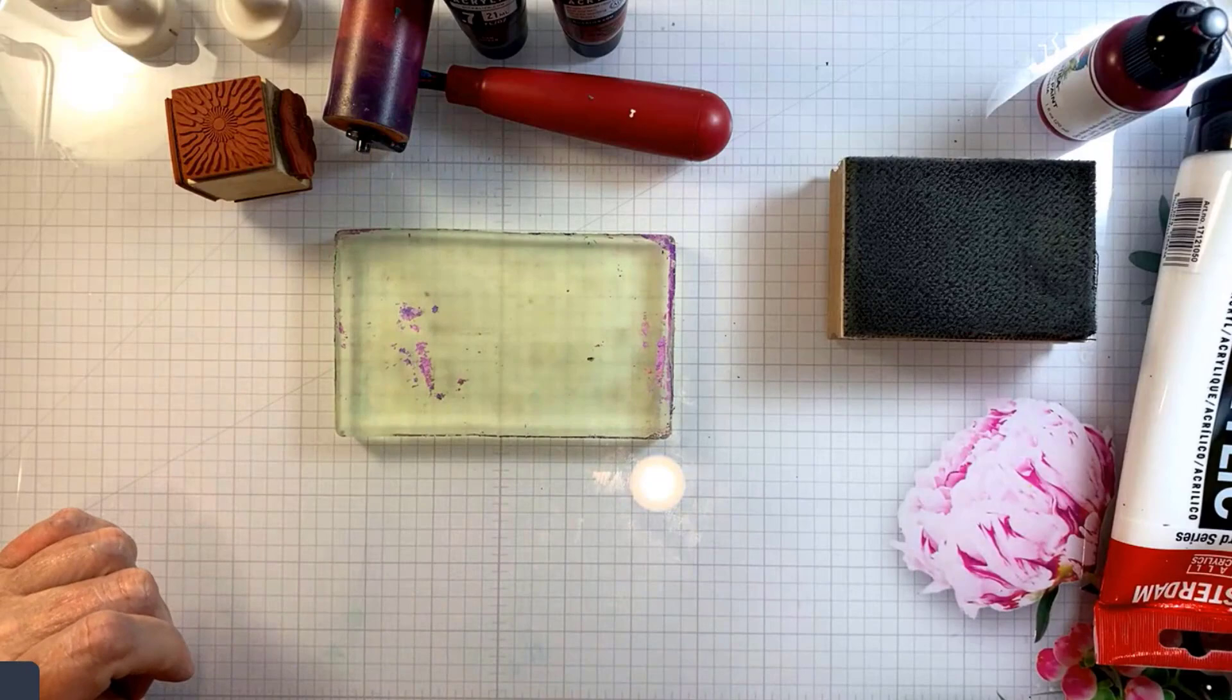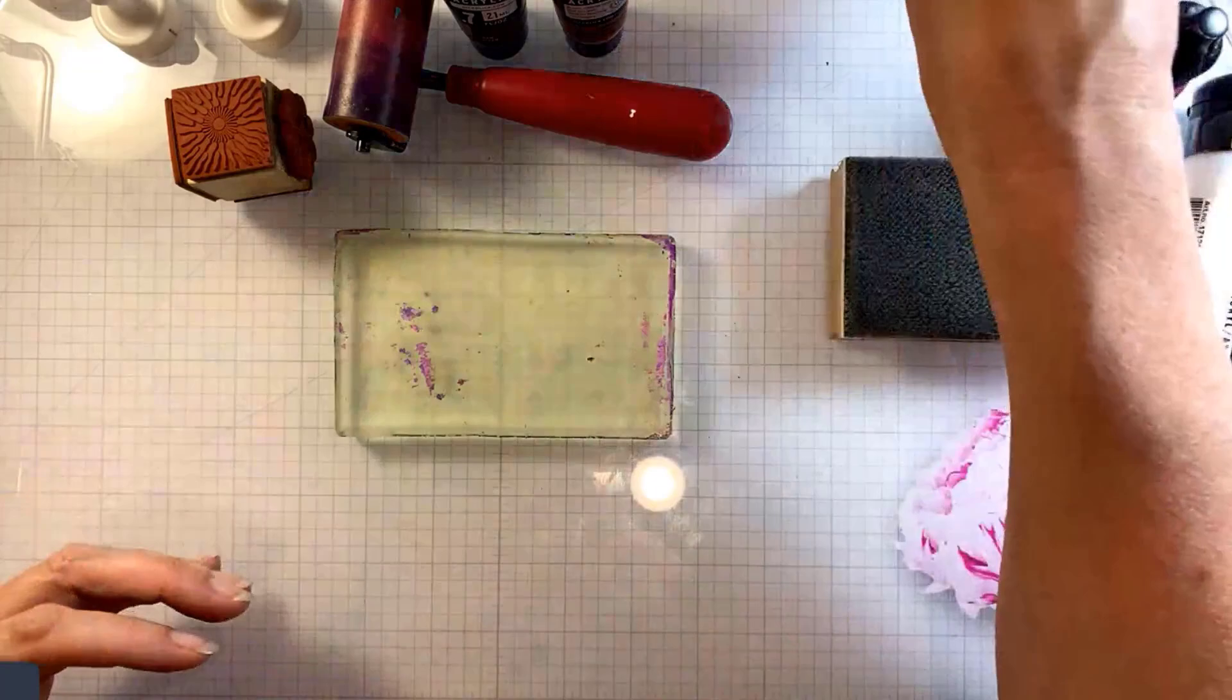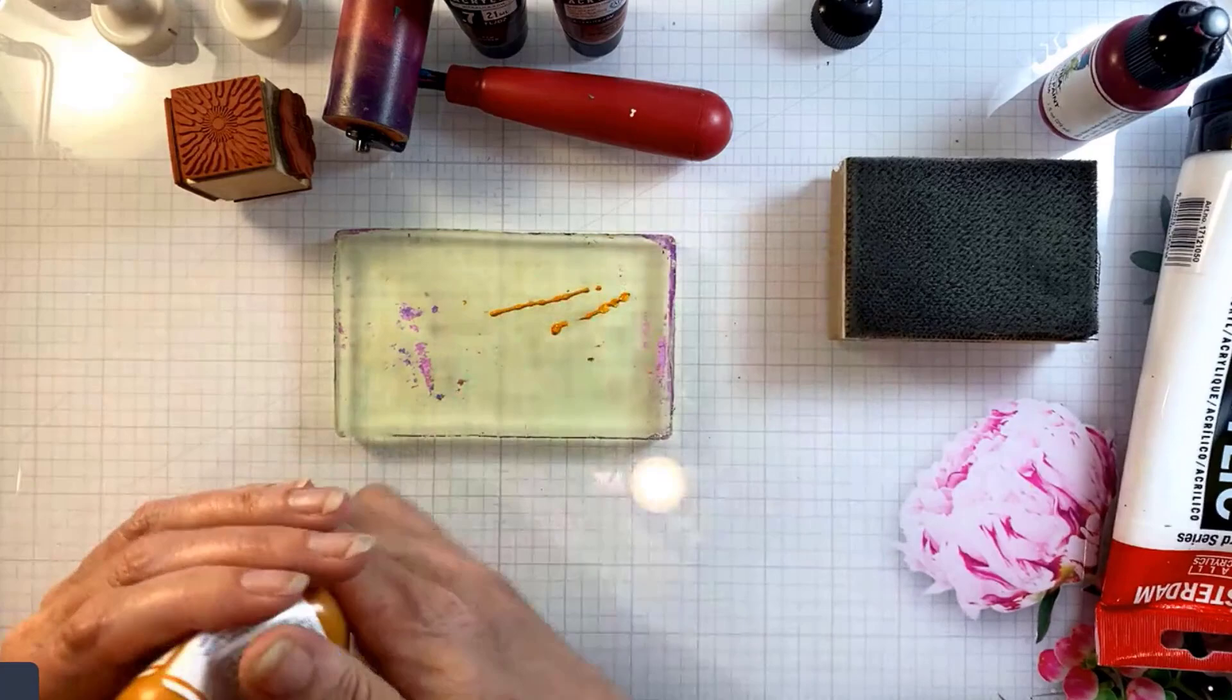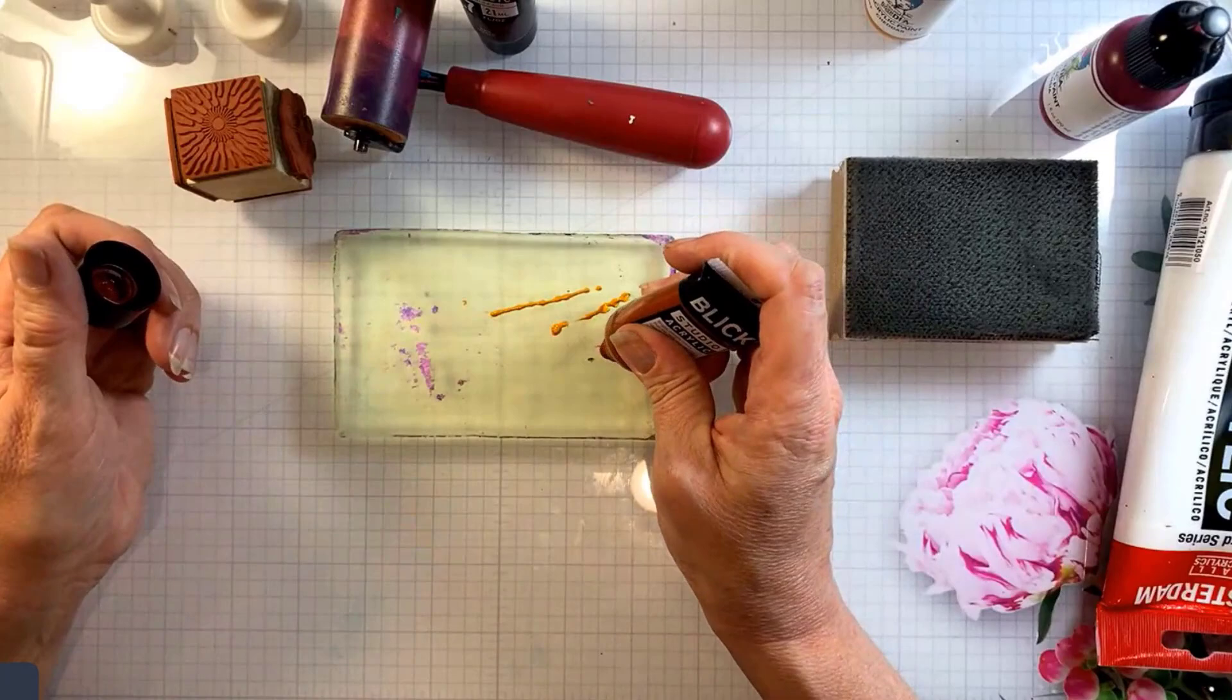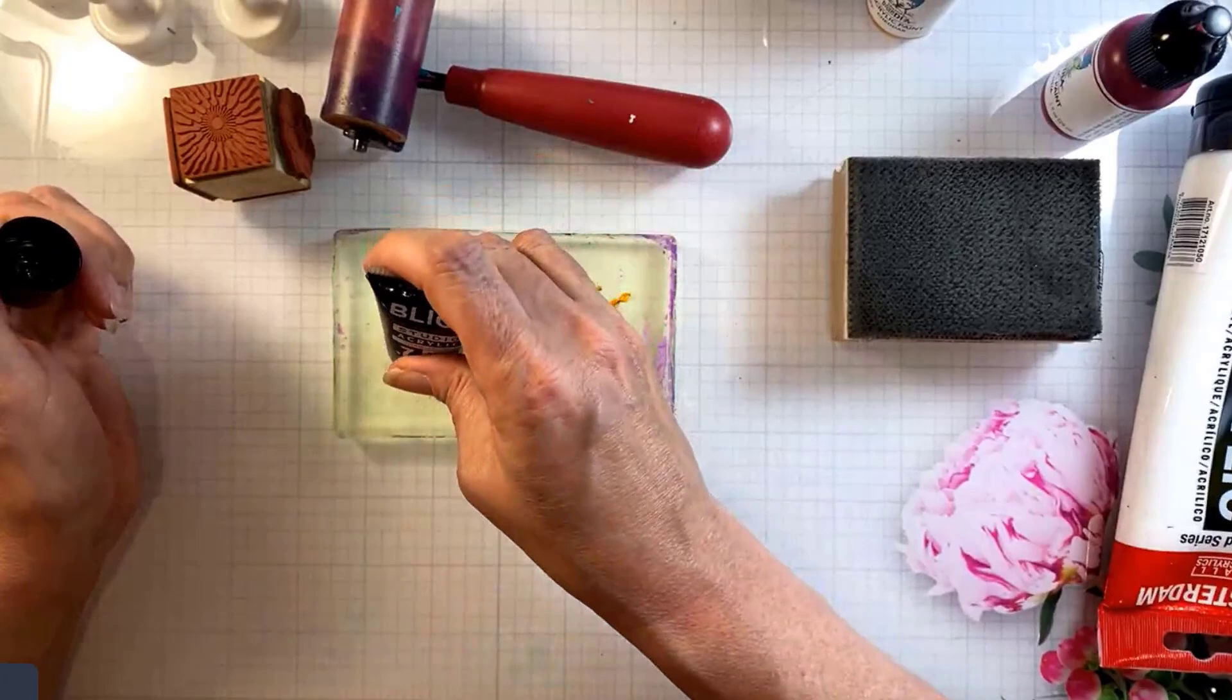One of my favorite looks in mixed media projects and card making is a patina look. There are a lot of different ways to achieve a faux patina effect but one of the most fun ways is by lifting prints with green or turquoise paint.